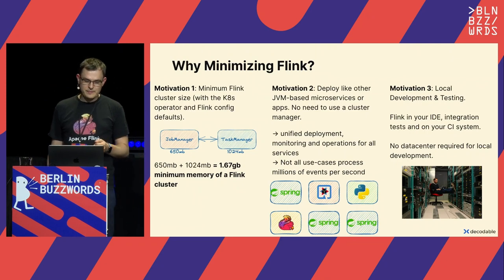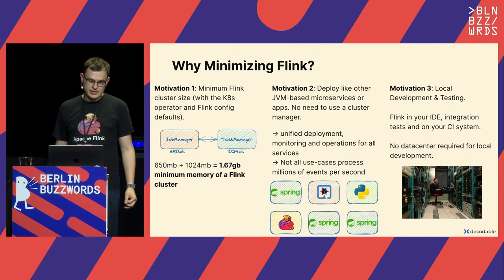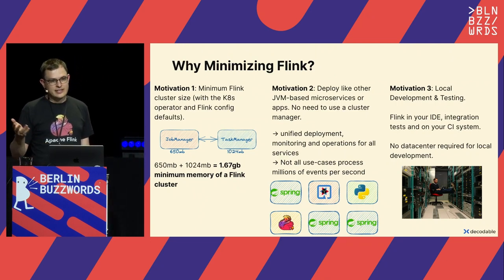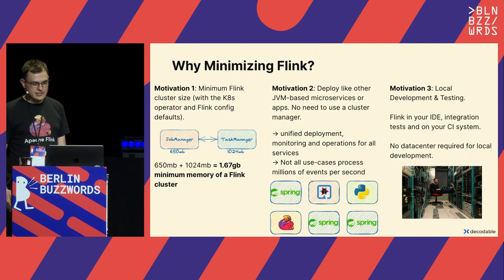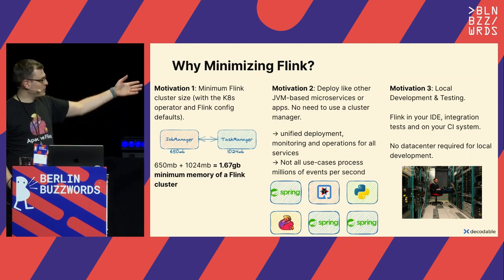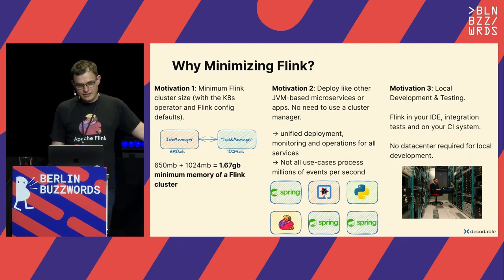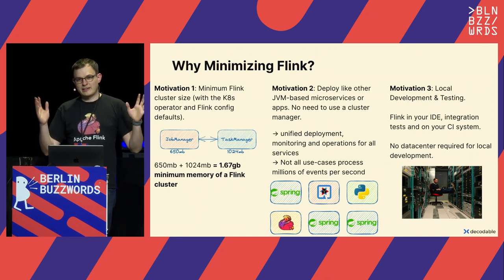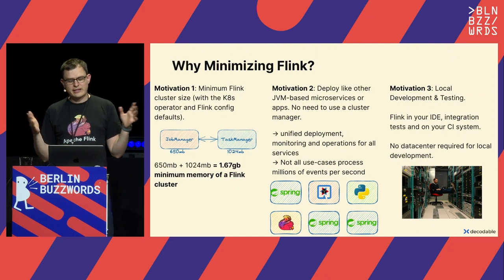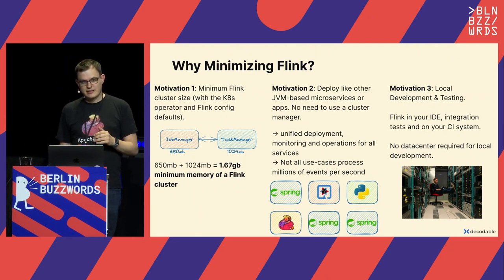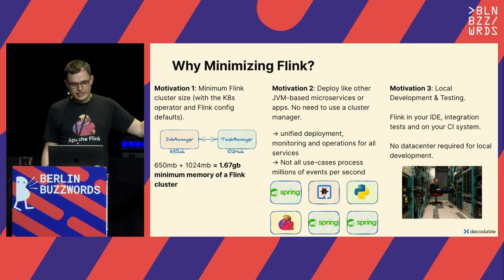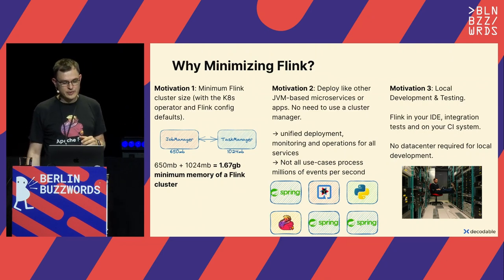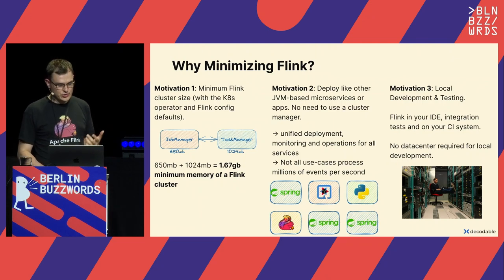The third motivation is local development and testing. You want to run Flink in your IDE to test whether code compiles and makes sense, or run integration tests to verify your analysis is correct. The third case is actually already covered in Flink — when you initialize a stream execution environment, it automatically launches a mini cluster from a main method. There's also a JUnit rule for creating a mini cluster in unit tests. But the first two cases are not really covered in the Flink documentation.